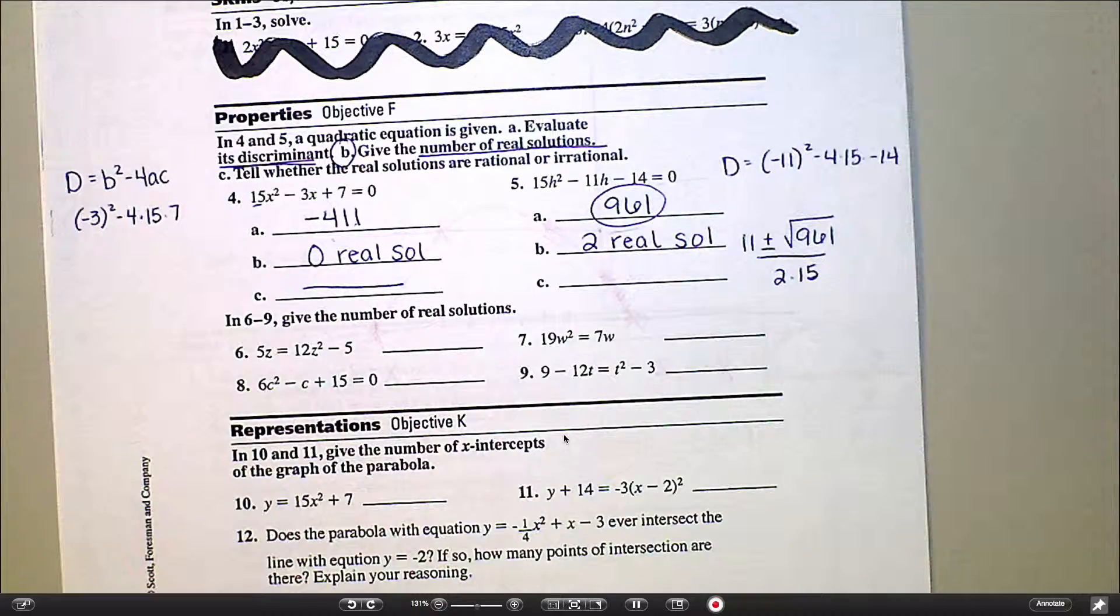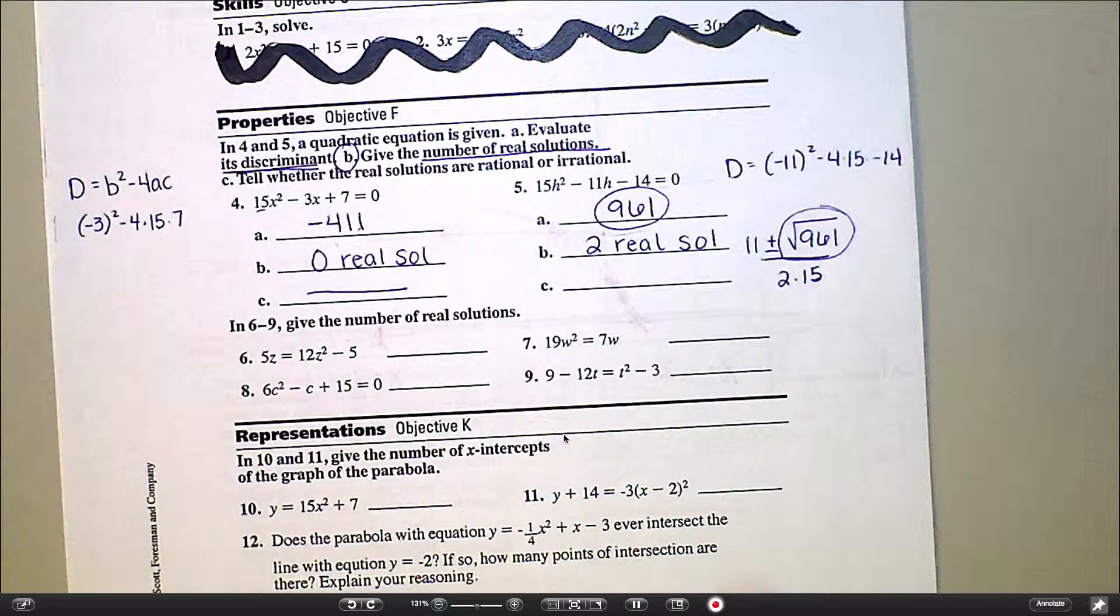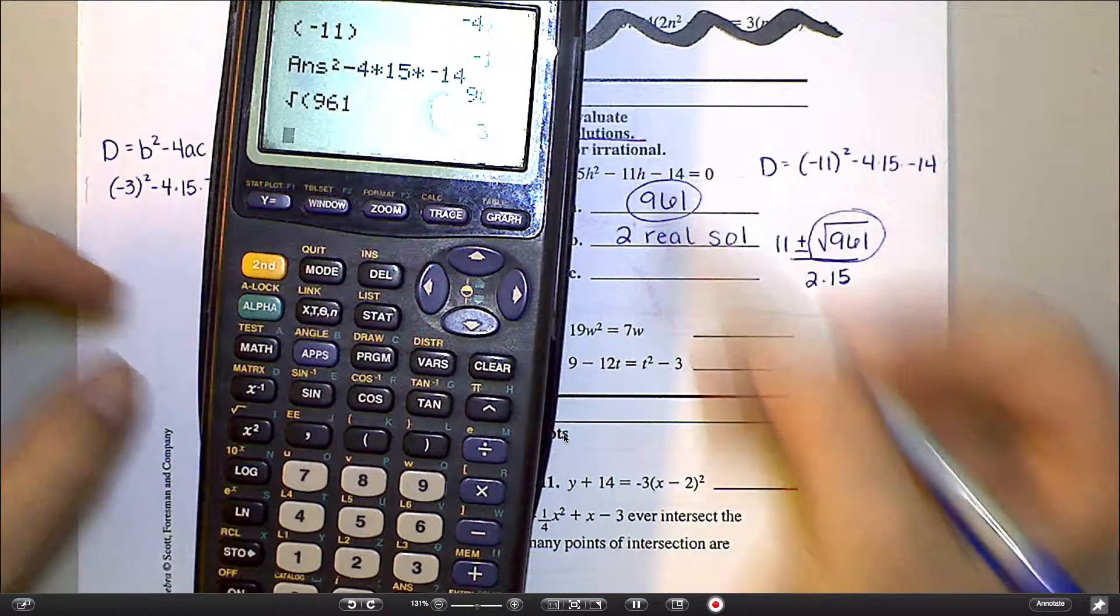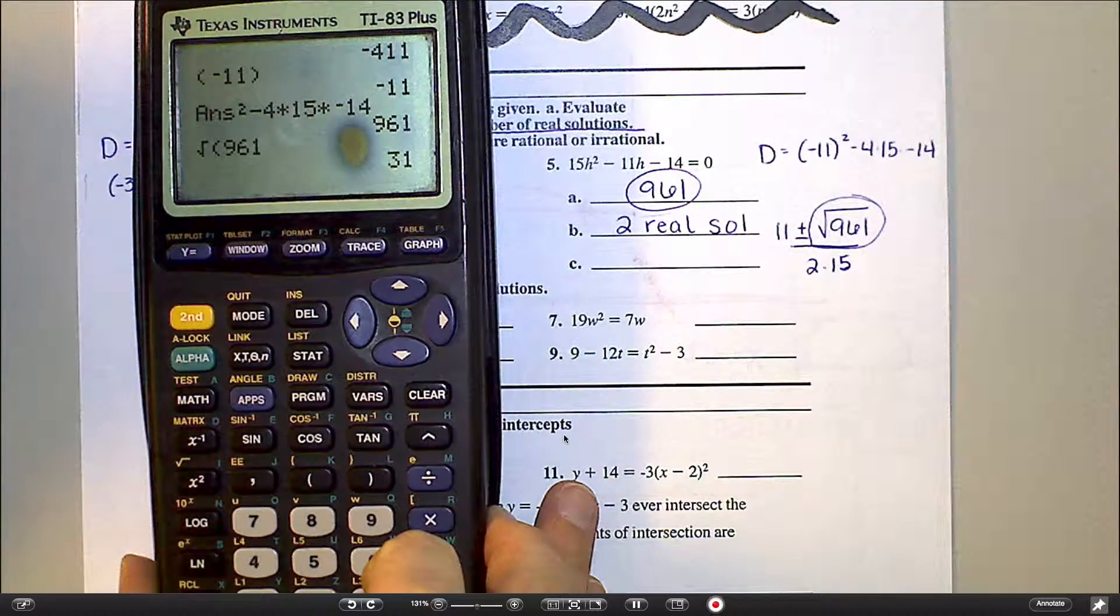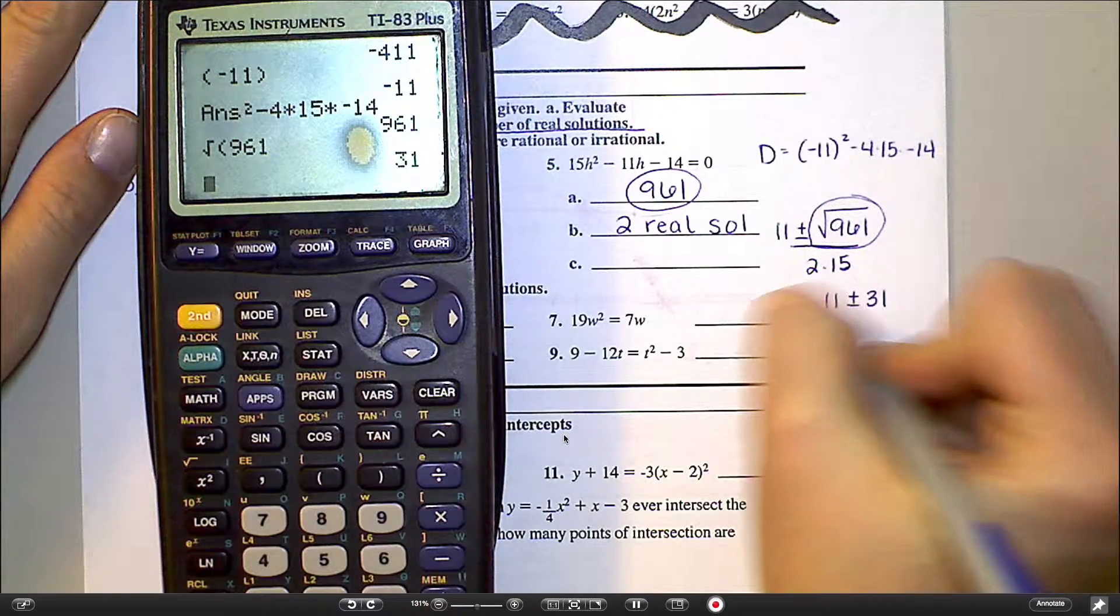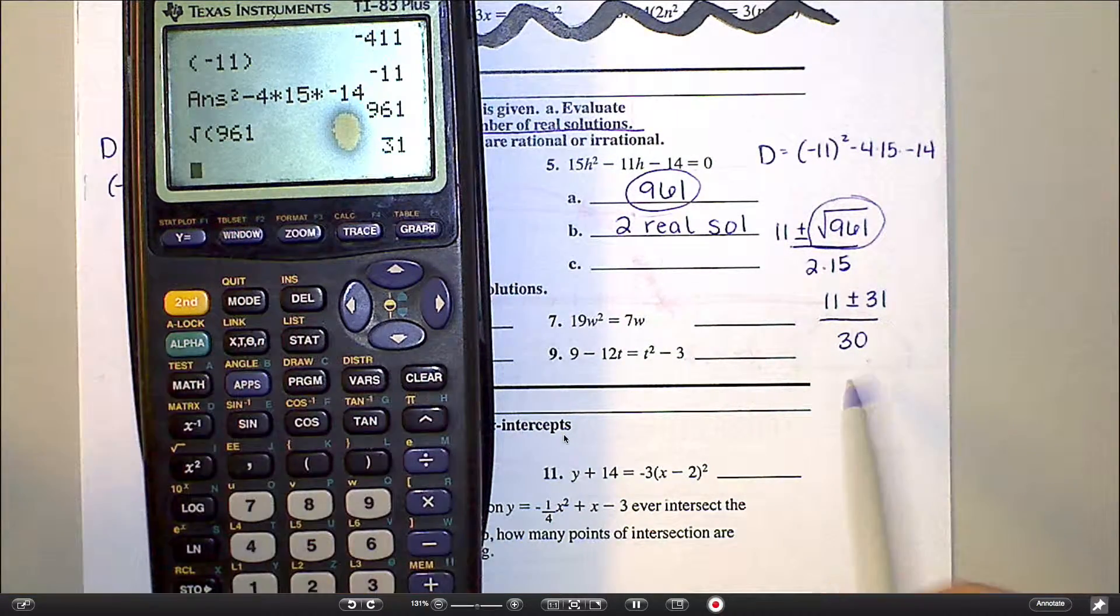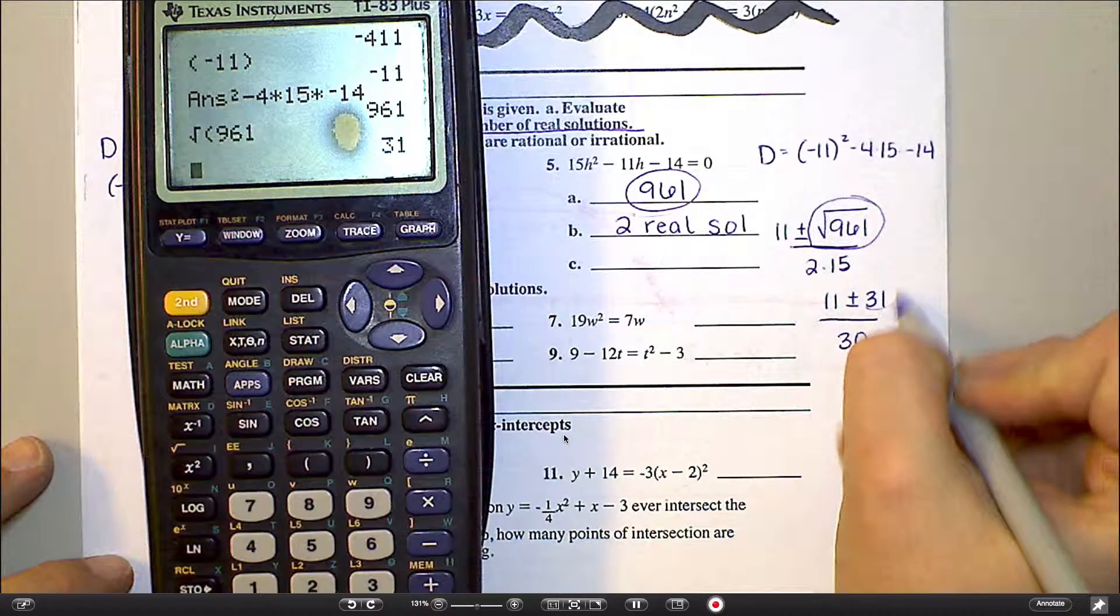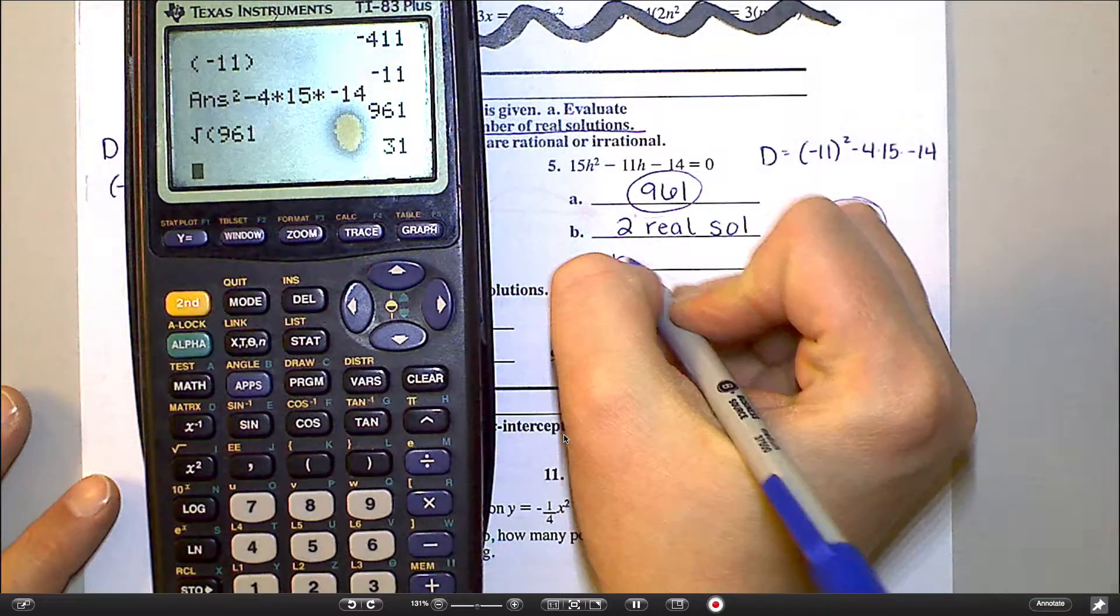If it were going to be irrational, the only way it would come out to be irrational is if this came out to be irrational. So what I'm going to do is I'm going to take the square root of that 961 and see what happens. See how I got, I got 31 as my square root. So that means when I go to do the quadratic formula, it would be 11 plus or minus 31 over 30. Now, this might come out to be a decimal answer just because the numbers don't divide evenly, but it's not going to come out to be irrational because this did not come out to be an irrational decimal. This came out nice and clean and pretty. So that means my answers are going to be rational.